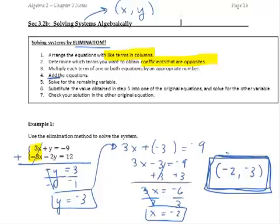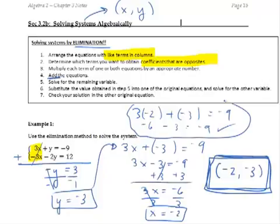Now we should check this really quick to make sure it works. So if we plug in 3 times negative 2 plus y equals negative 9. Negative 2 plus negative 3. This gives us negative 6 minus 3. Yes, that would be negative 9. Check. So we know that this guy works. That's our solution.